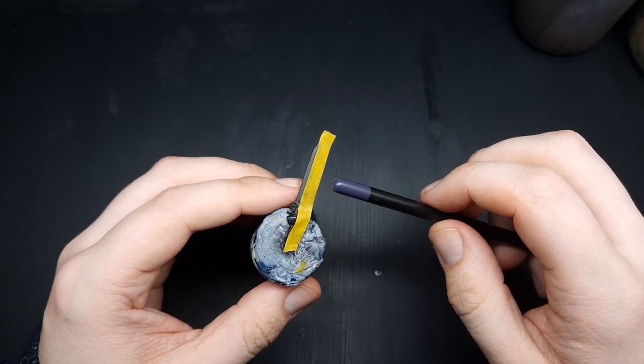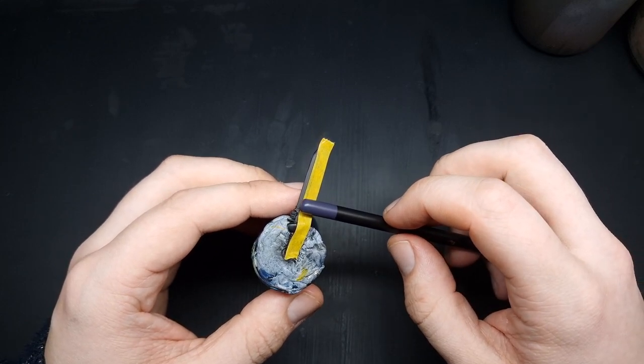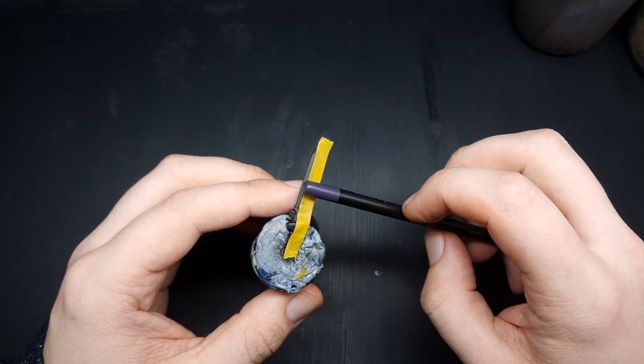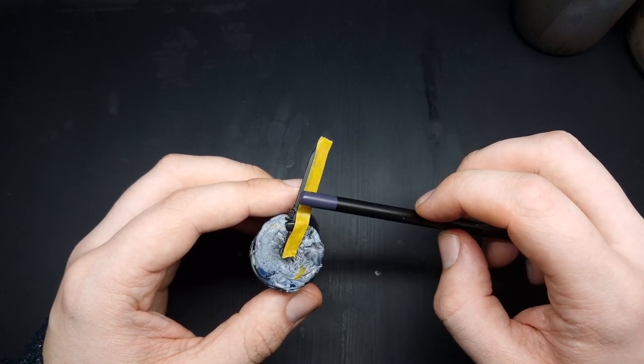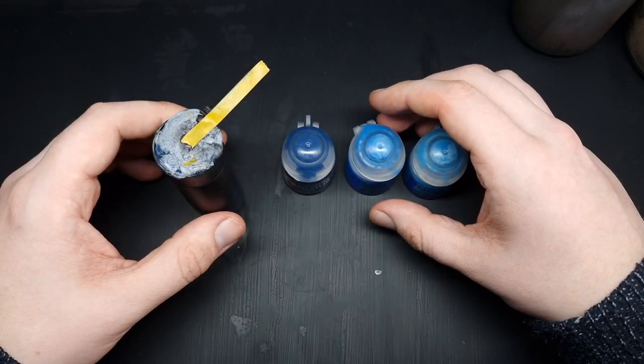When you've got your masking tape lined up, you can just use the end of a paintbrush and just run this along your sword to ensure that your masking tape is fully adhered down so you don't get any overspray.